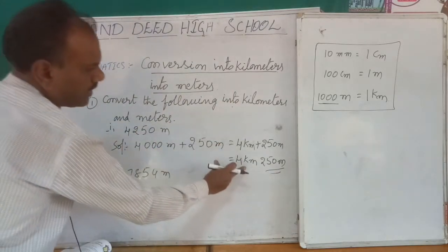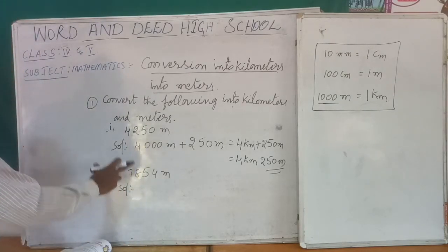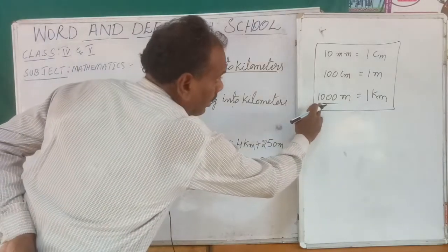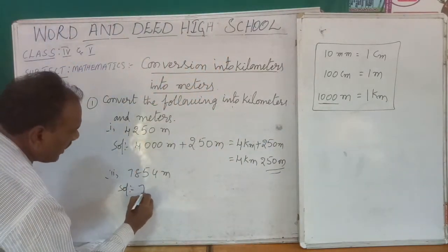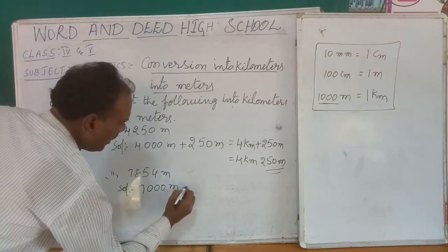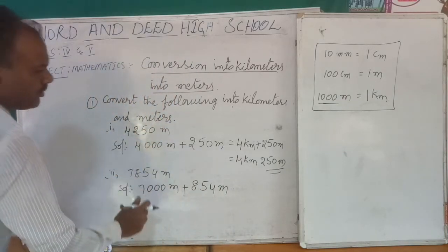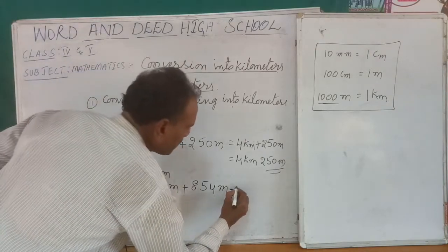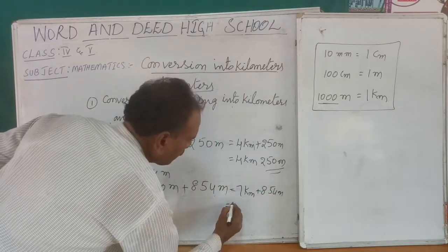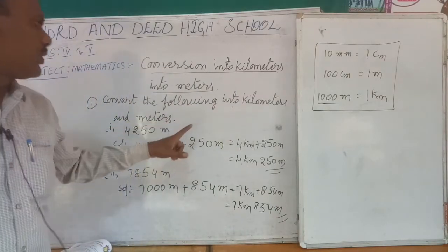This is meters converting into kilometers. For the second problem: 7,854 meters converting into kilometers. Since 1,000 meters = 1 kilometer, we write 7,854 = 7,000 + 854 meters. 7,000 meters equals 7 kilometers, so the answer is 7 kilometers 854 meters.